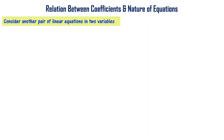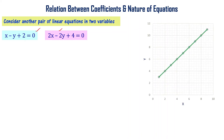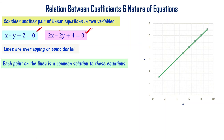Another pair of linear equations: x - y + 2 = 0 and 2x - 2y + 4 = 0. As seen in the previous video, these two equations represent the same line — the second equation is simply 2 times the first equation. On the graph, both equations give the same line, so the lines are overlapping or coinciding. Any point on that line is common to both equations, so there are infinitely many solutions.